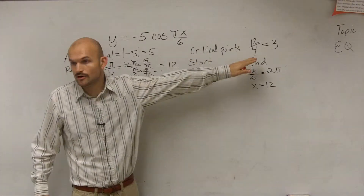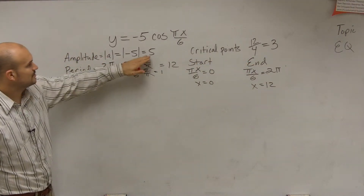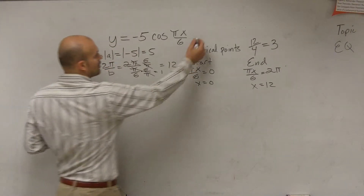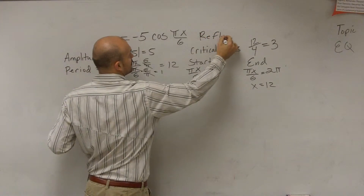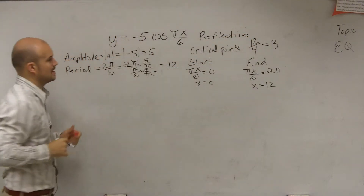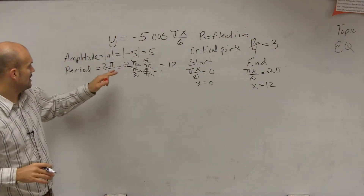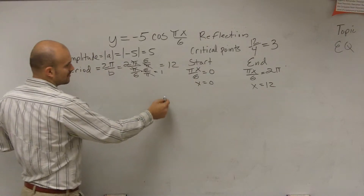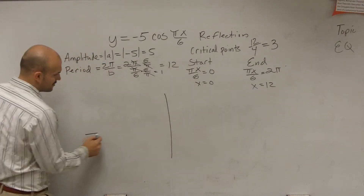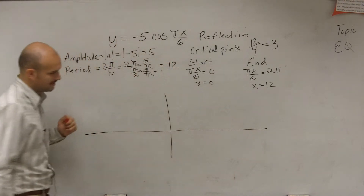So what that means is when we have an initial period, we're going to start at 0 and go to 12. The distance between each one of my critical points is 3. I'm going to have an amplitude of 5. Notice there's a negative — so, therefore, I'm going to have a reflection over the x-axis. And that's about all we need.